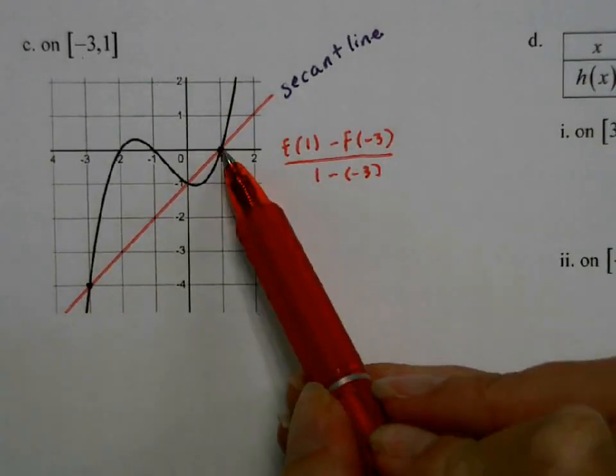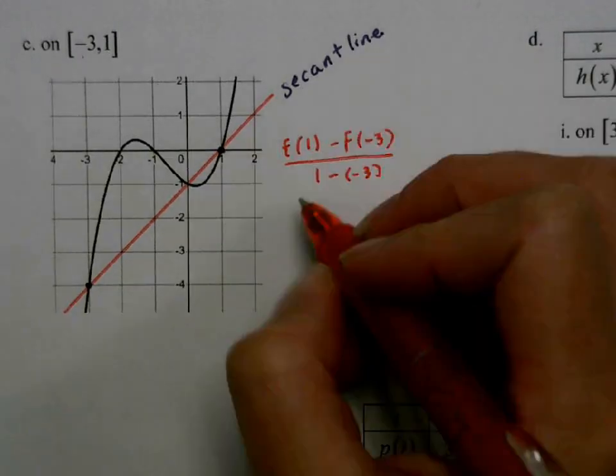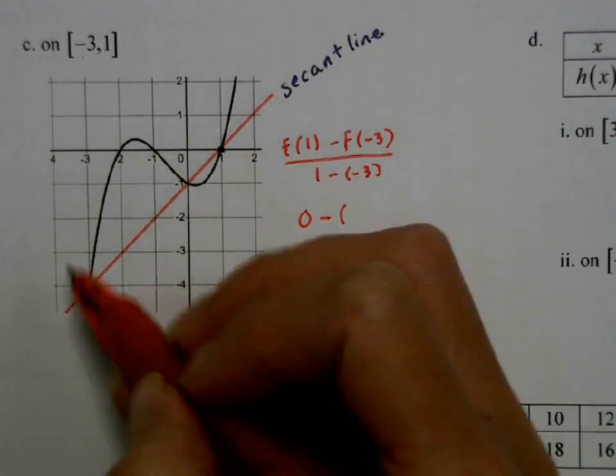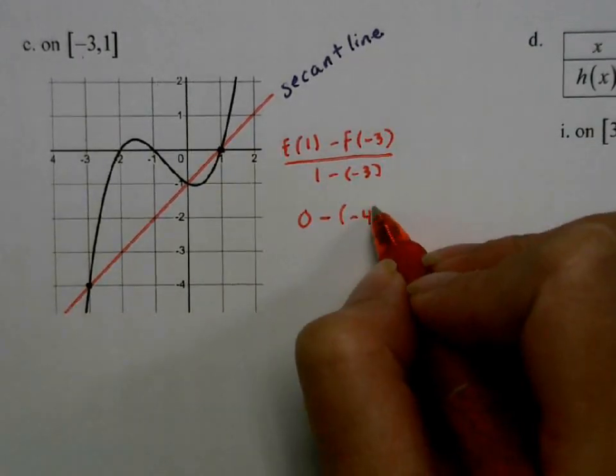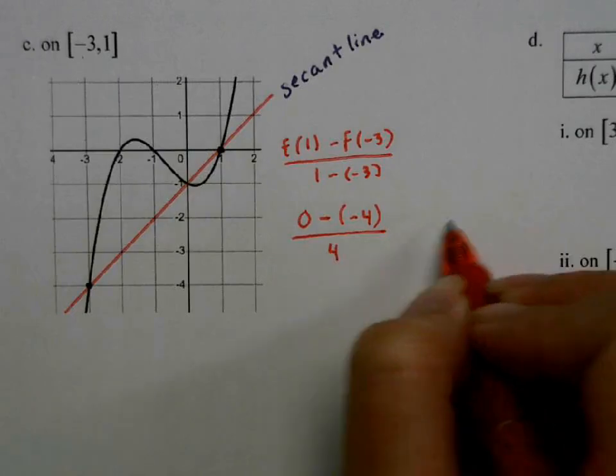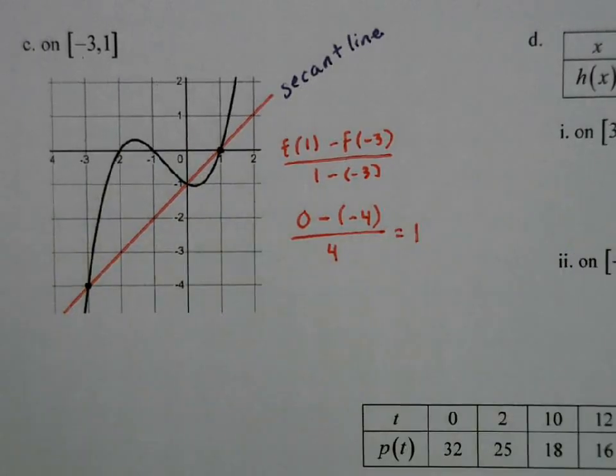Easily we can see on the graph we have a slope of 1. But let's go ahead and go through the math to support that. From my function, my f of 1 is 0, my f of negative 3 is negative 4, over 4, which is 4 over 4, which again is 1.